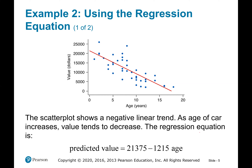Example two shows a negative linear trend — the relationship between the age of a car and its value. The scatter plot shows a negative linear trend going downward. As the age of a car increases, the value tends to decrease.